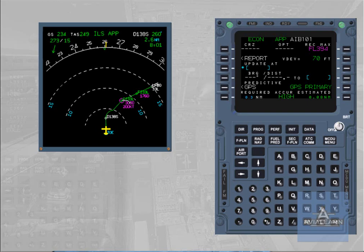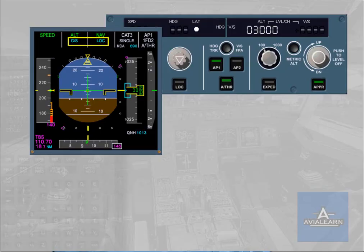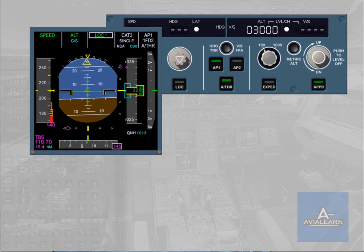If the interception is completed in navigation mode, accuracy must be checked high unless GPS is primary. Localizer and glide slope can be armed using the approach mode push button, provided the ILS and radio altimeter are not faulty, the aircraft is above 400 feet, and the ILS frequency and course are set identically on both receivers. When the localizer is captured, LOC star mode engages. Once the aircraft is established on the localizer axis, LOC mode engages. The localizer is intercepted before the glide slope.